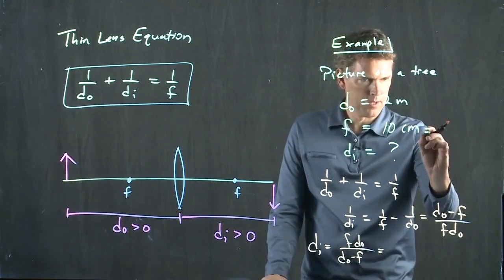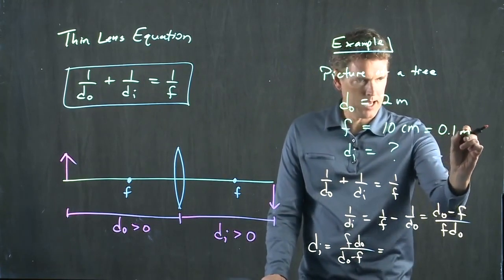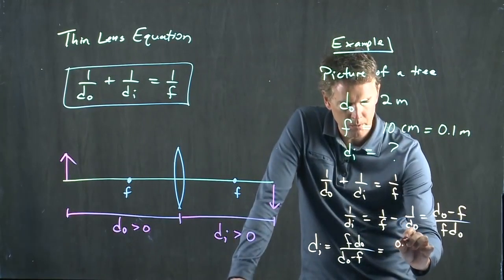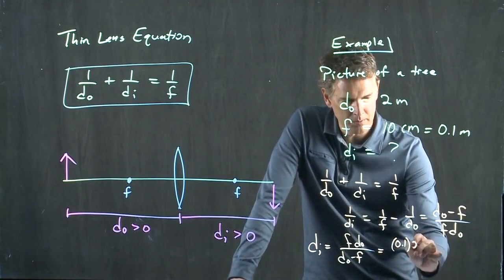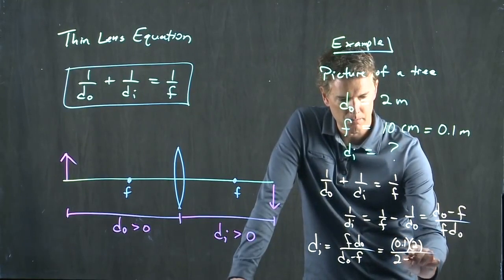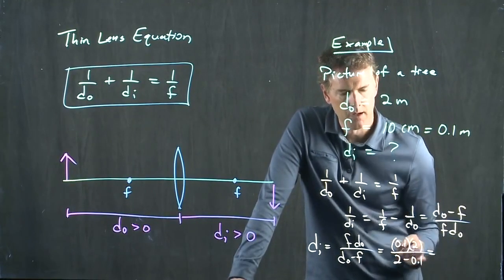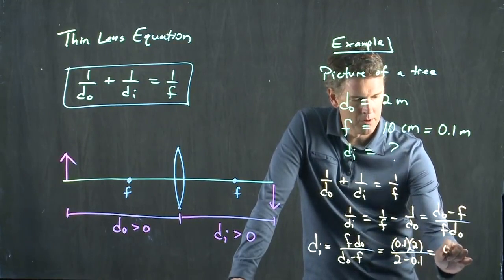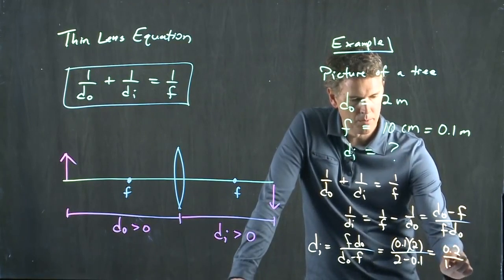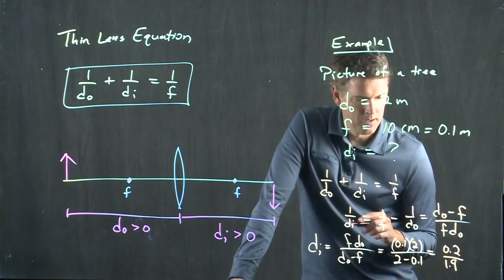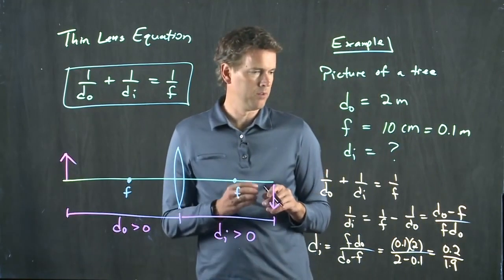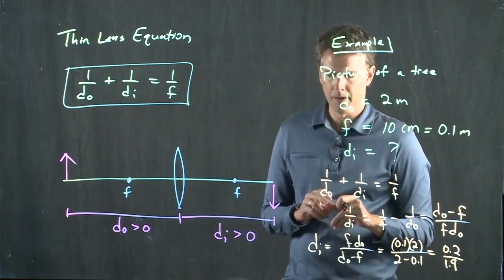10 centimeters is, of course, not SI units, so we need to make that SI units. What do we get? We get 0.1 times DO, which we said was 2. We're going to divide by 2 minus 0.1. And so we get 0.2 divided by 1.9. And so DI is very close to 0.1, but it's a little bit bigger than that.